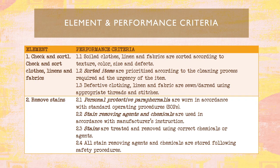Check and sort clothes, linens, and fabrics — this covers how to process and sort from whites to colored clothes, and how to organize bedsheets, pillowcases, and other items separately. Clothes, linen, and fabrics are sorted according to texture, color, size, and fabric type. Sorted items are prioritized according to the cleaning process required and urgency — for example, if there is a stain on a child's clothing, that should be prioritized. Defective clothing, linen, and fabric should be sewn using appropriate threads and stitches.